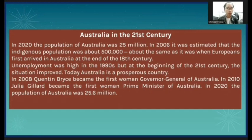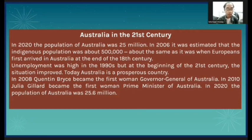Australia in the 21st century. In 2020, the population of Australia was 25 million. In 2006, it was estimated that the indigenous population was about 500,000, about the same as it was when Europeans first arrived at the end of the 18th century. Unemployment was high in the 1990s, but at the beginning of the 21st century the situation improved. In 2008, Quentin Bryce became the first woman Governor-General of Australia. In 2010, Julia Gillard became the first woman Prime Minister of Australia. In 2020, the population of Australia was 25.6 million.